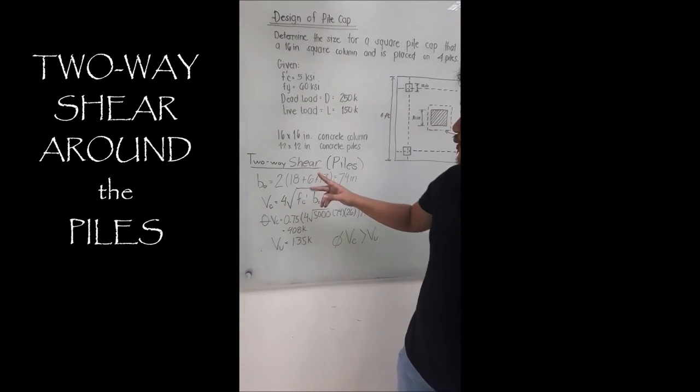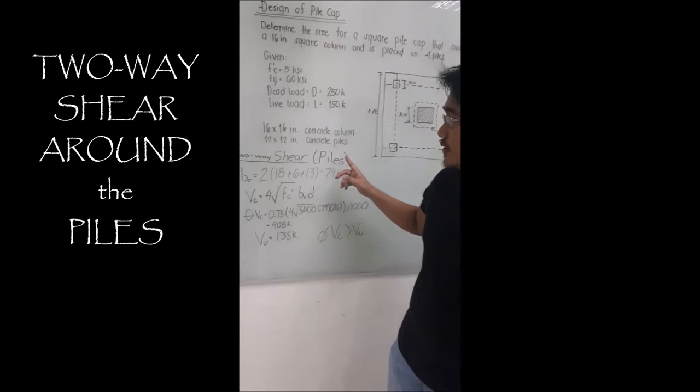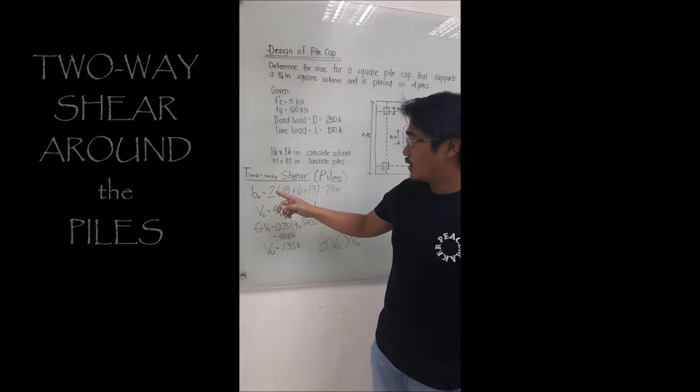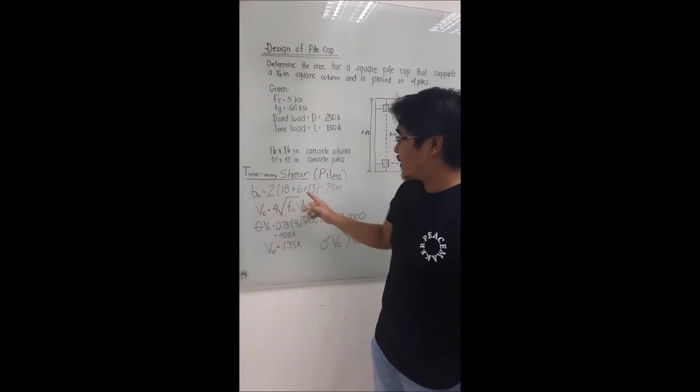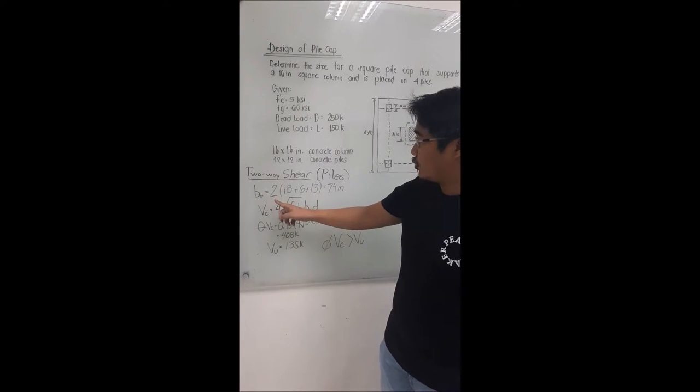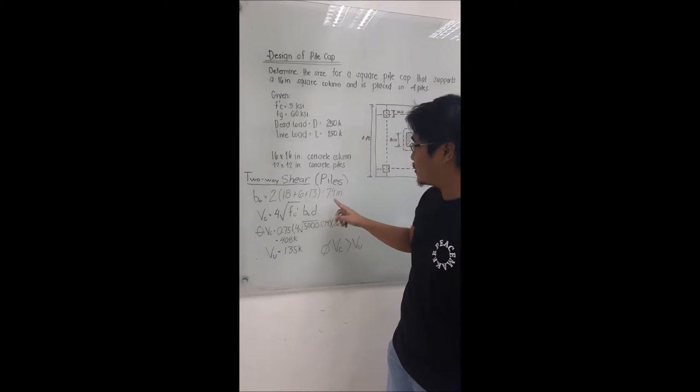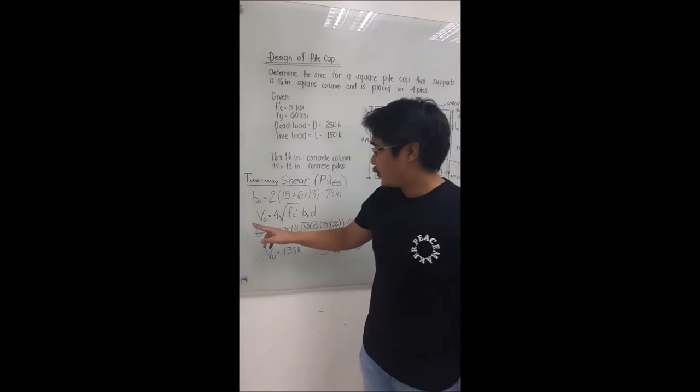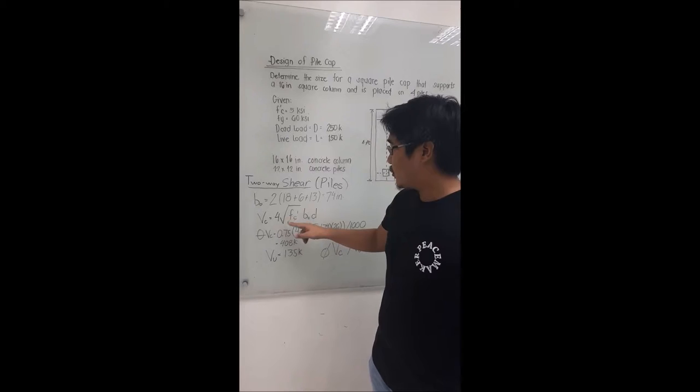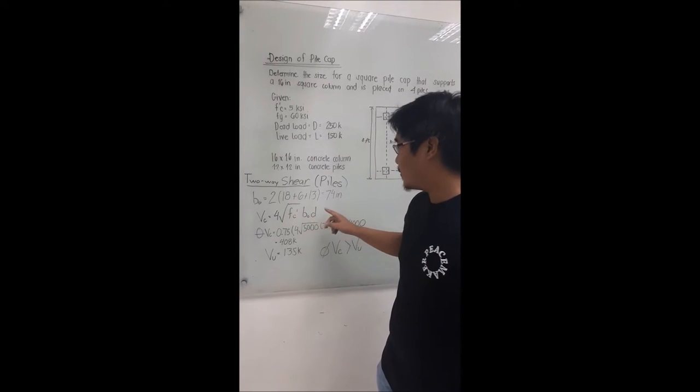For the two-way shear around piles, first get V sub O which is where the punching shear acts on the piles. Multiply 2 by 18 plus 6 plus 13 to get the perimeter equal to 74 inches. The formula for VC is 4 times square root of FC prime, times V sub O times D.